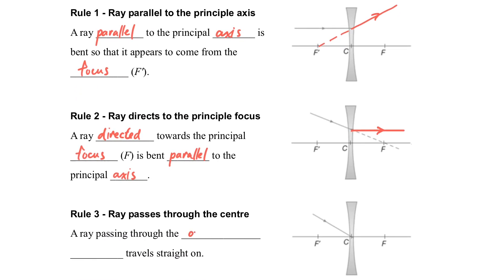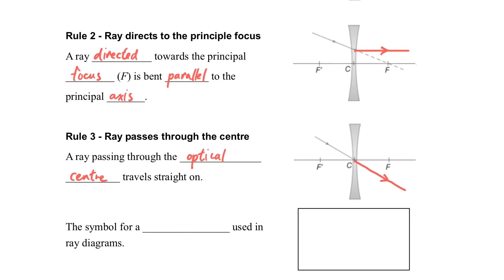And then the third rule is the simplest rule. When the light ray traveled through the center of the lens, the light will go directly and pass through it. So here are the three rules.